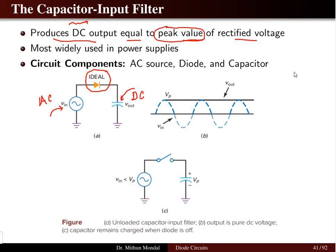The rectified voltage represents AC to DC conversion, and we have the peak value as Vm here. So the voltage present in the capacitor is Vm. This filter is widely used in various power supplies and is quite famous compared to the choke input filter.